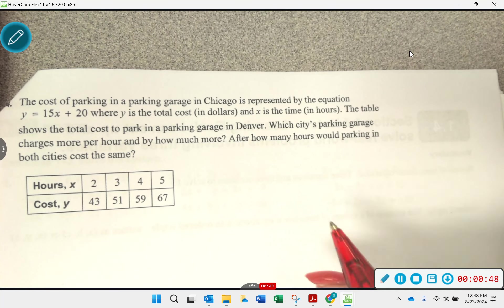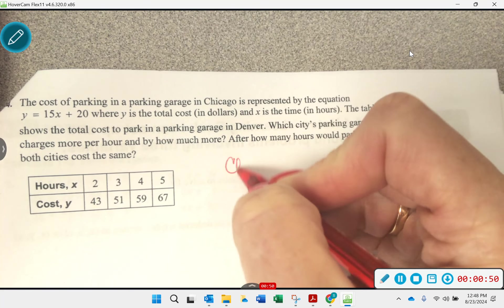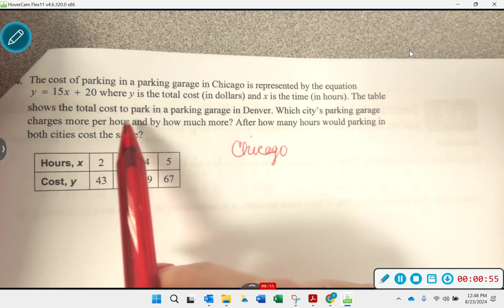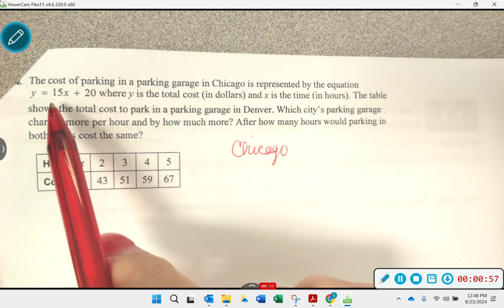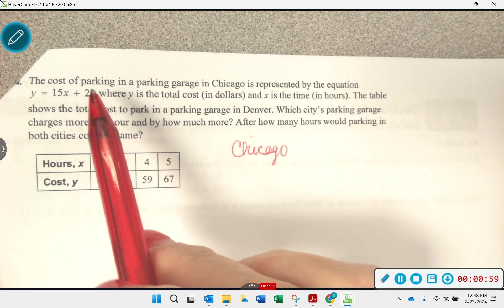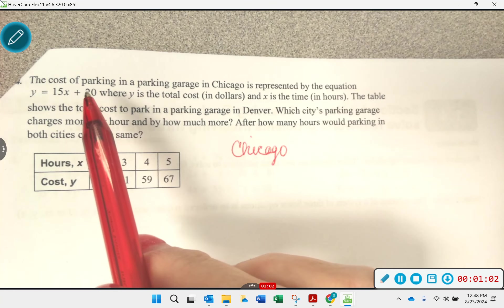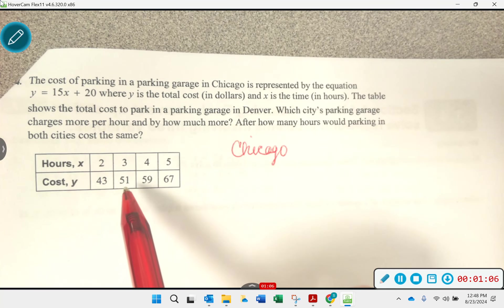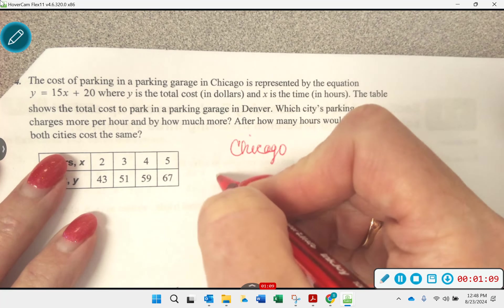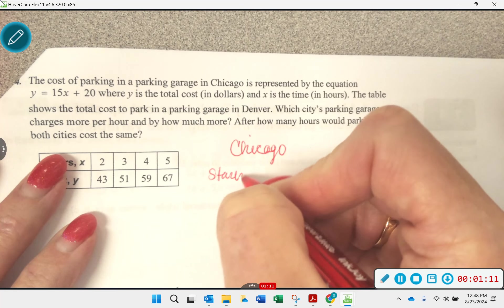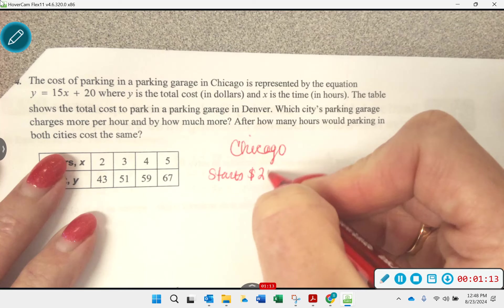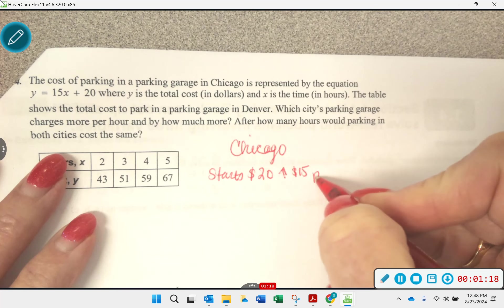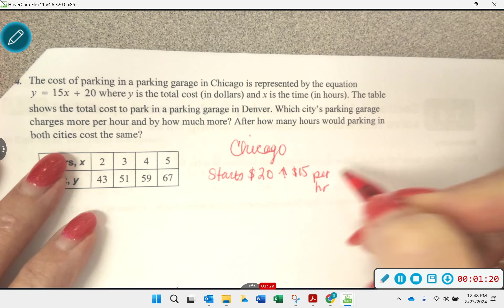All right, so let's talk about Chicago first. Can somebody interpret what this equation means if it's y equals 15x plus 20? What do you think, Madison? Great. So we know this about Chicago. So just to pull into that parking lot, it's going to start at $20 and then go up $15 per hour. Great.